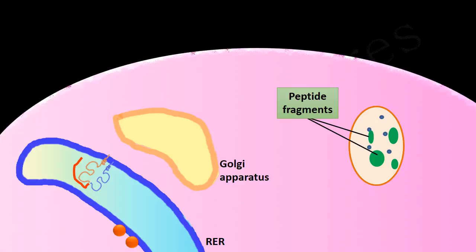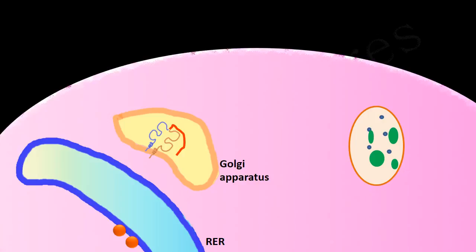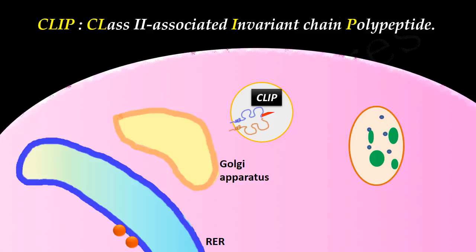These MHC II–invariant chain complexes are transported from the endoplasmic reticulum to the Golgi apparatus, and from the Golgi apparatus to another vesicle. The invariant chain is digested and only a small fragment remains bound to the peptide-binding groove of the MHC II molecule. This fragment is known as CLIP, which stands for class II associated invariant chain polypeptide.